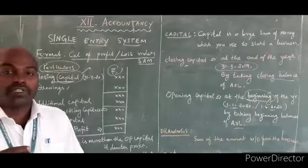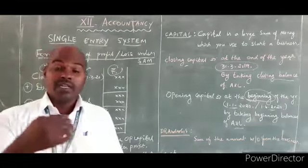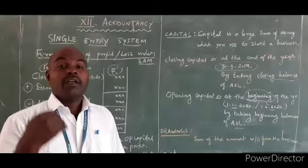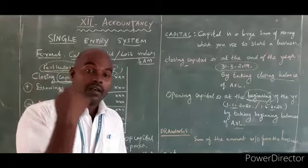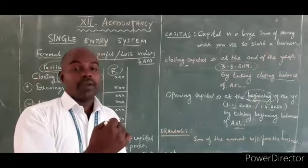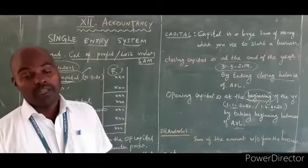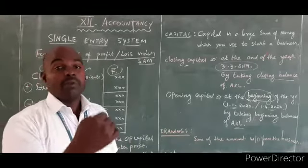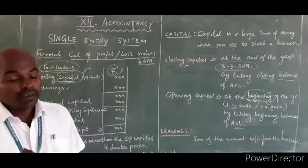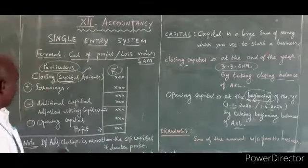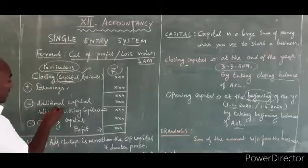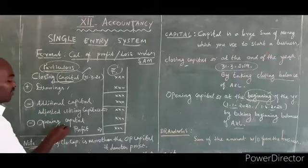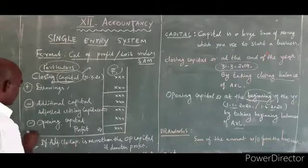How to calculate profit? If the adjusted closing capital is more than the opening capital, the answer will be profit. If the adjusted closing capital is less than the opening capital, the answer will be loss.